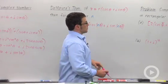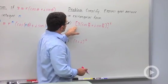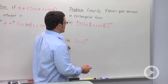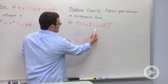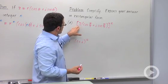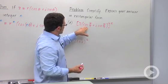Let's use de Moivre's theorem in a problem. It says simplify, express your answer in rectangular form. Let's start with this one. Here it's already in trigonometric form. So it's really easy to apply De Moivre's theorem.